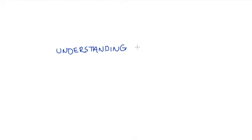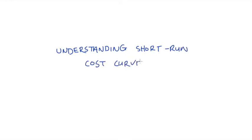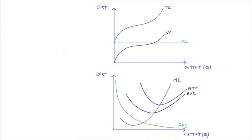Hi everyone. In this video I'm going to be looking at understanding the firm's short run cost curves — both identifying the curves and understanding their shape. All of the curves I will look at are here: total costs, variable costs and fixed costs. On the bottom diagram we have marginal costs, average total costs, average variable costs and average fixed costs.